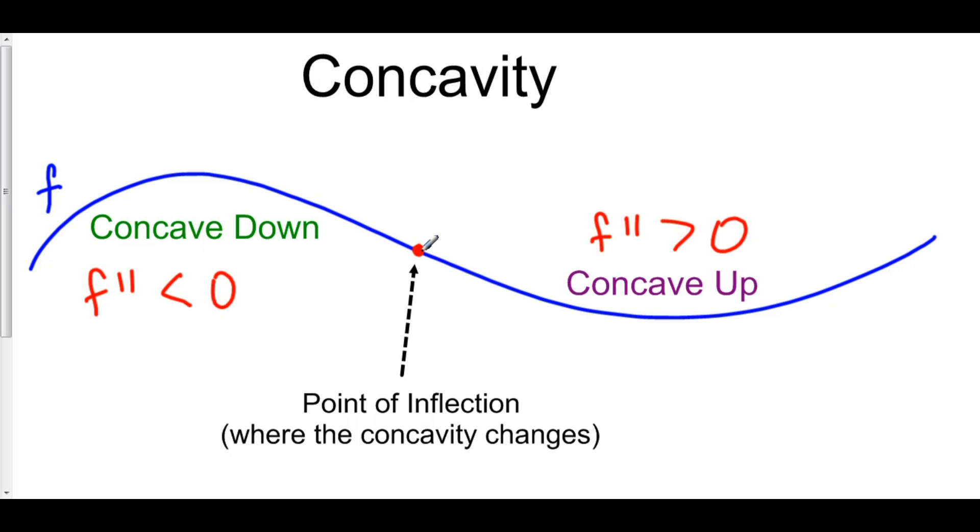There is a point in between where f is neither concave down nor concave up. This is called the point of inflection.